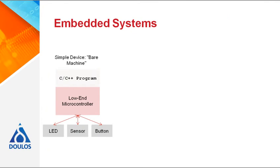Typically, the basic devices will run a C or C++ program on the microcontroller, which will interact with the various peripheral devices and control the system. They are often referred to as bare machine programs, as the application must interact directly with the hardware — the processor and the various connected peripherals: switches, buttons, sensors, displays and so on.